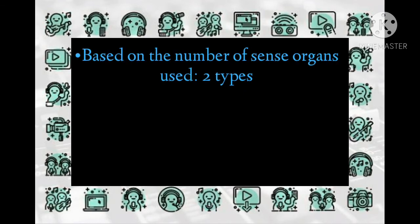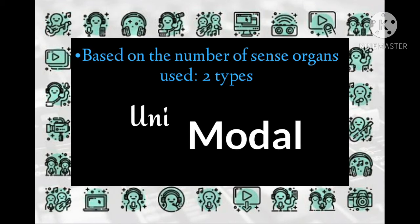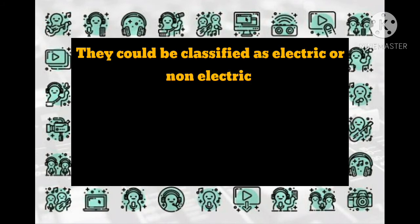Classification based on the number of sense organs used: two types. First, unimodal — those in which only one type of sense, either sight or auditory, is used; examples are audio aids or visual aids. Second, bimodal — those in which both visual and auditory sense organs are used. These can further be classified as electronic or non-electronic.